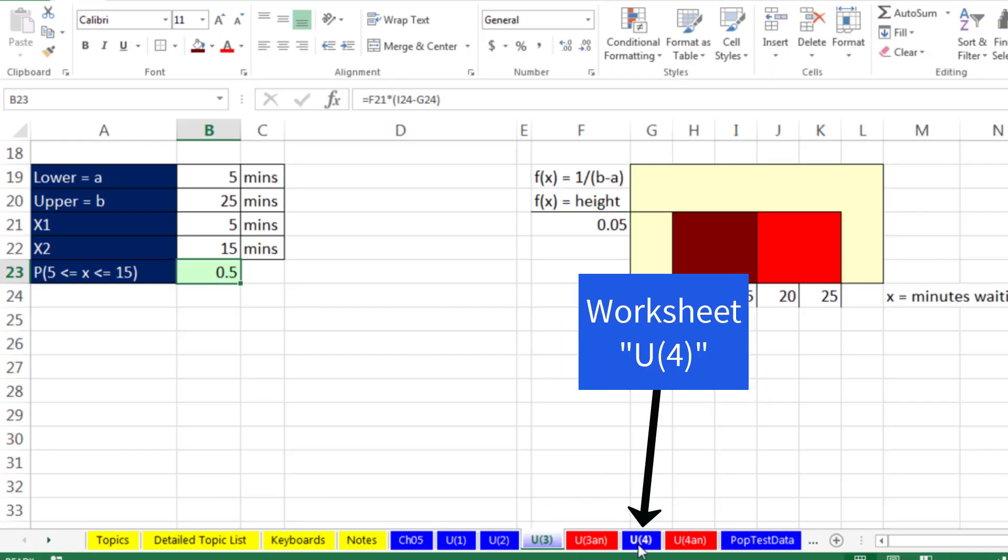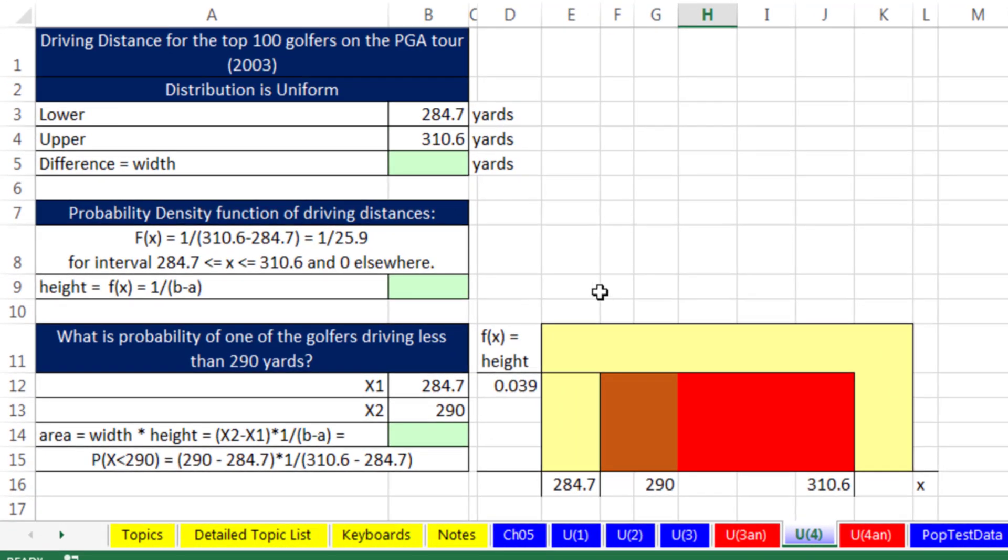Now we do have one other example. We can go over to uniform 4. Now this one has to do with driving distance for the top 100 golfers on the PGA Tour from 2003. Distribution is uniform. That means people were driving from 284.7 to 310.6 more or less uniformly. So we can calculate the difference. That gives us the whole width here. So equals the MAX minus the MIN. Over this 25.9 yard distance, people were more or less driving uniformly. And here, we already calculated it down here, but I'm going to calculate equals 1 divided by that total difference from the MAX to the MIN uniform rectangle.